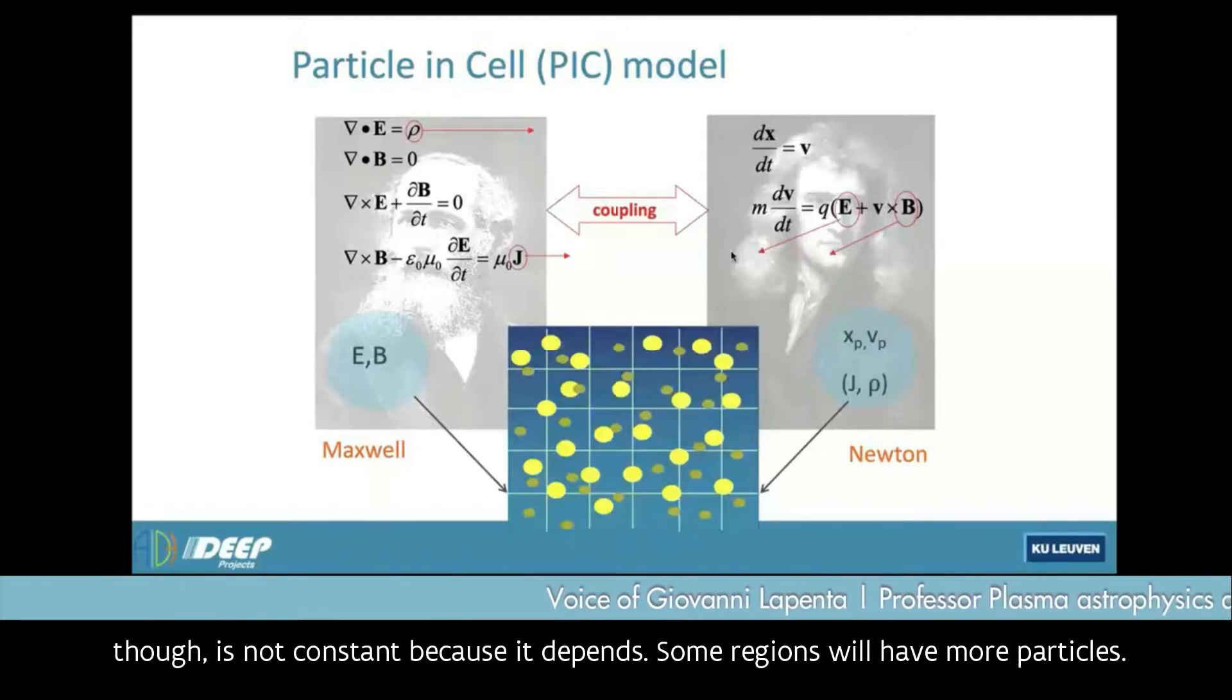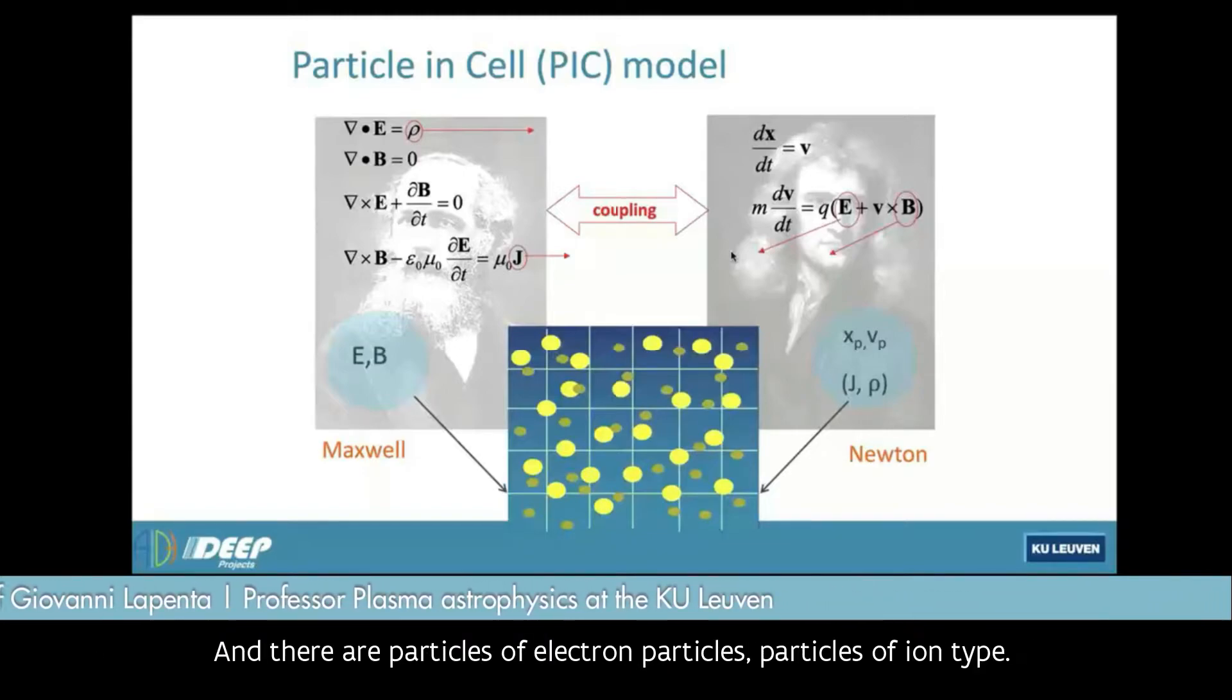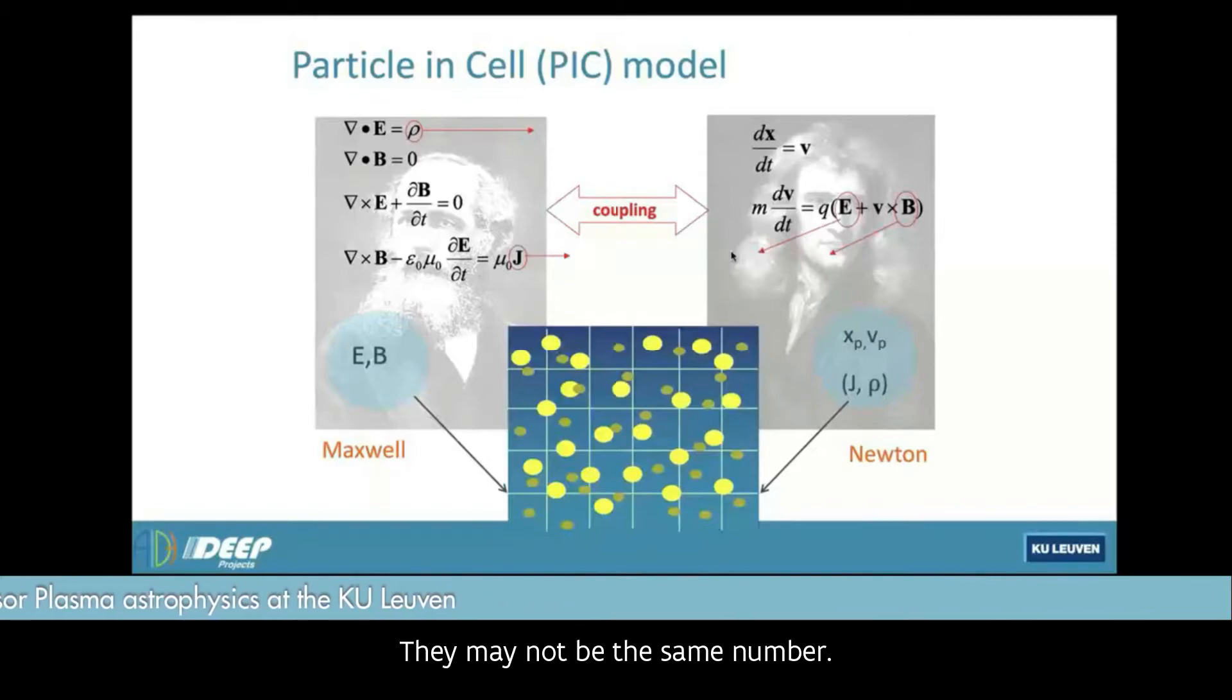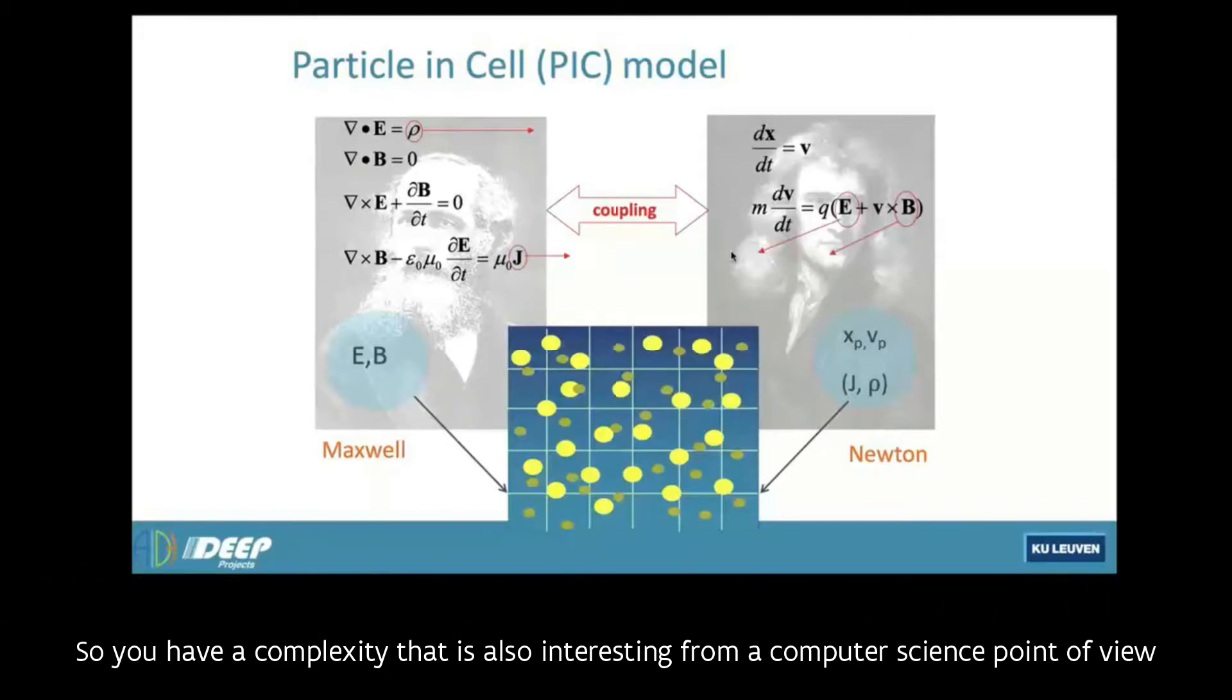Their number though is not constant, because it depends. Some regions will have more particles, other regions will have fewer particles, and there are particles of electron type or particles of ion type. They may not be the same number. So you have a complexity that is also interesting from a computer science point of view, because it allows you to have more degrees of freedom of what you do with the CPUs and GPUs.